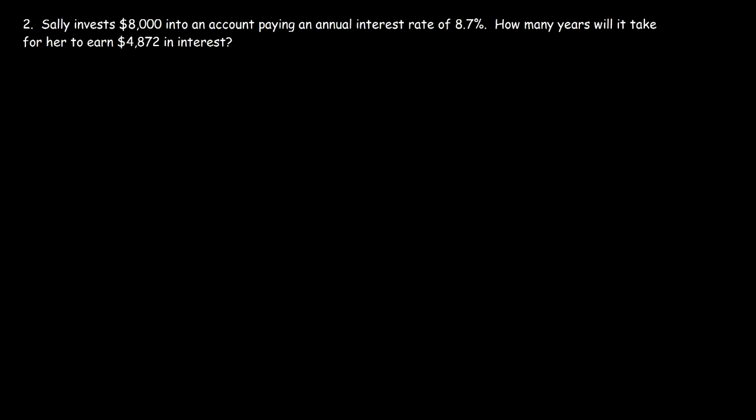Number two, Sally invests $8,000 into an account paying an annual interest rate of 8.7%. How many years will it take for her to earn $4,872 in interest? The equation that we need to use, once again, is I is equal to P, R, T.